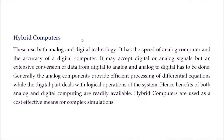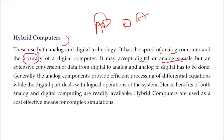Then we have hybrid computers. Why not use the speed of the analog computer and the accuracy of the digital computer? If we combine them — the hybrid computer may accept both digital and analog signals, but there has to be some conversion using an A-to-D converter — analog to digital — and D-to-A converter — digital to analog. So hybrid is analog plus digital. The analog part provides efficient processing for differential equations, while the digital part deals with logical operations of the system. The benefits of both analog and digital computing can be applied, and hybrid computers are used as a cost-effective solution for very complex simulations.